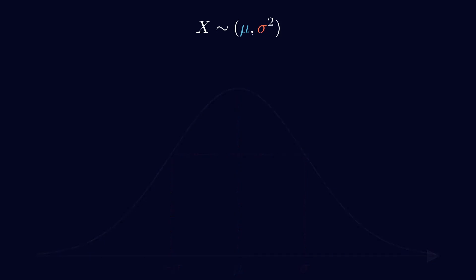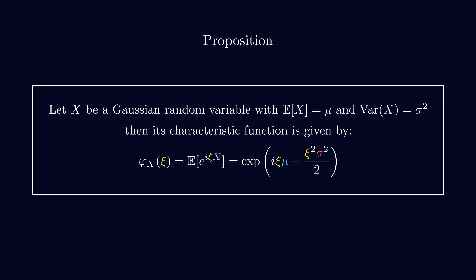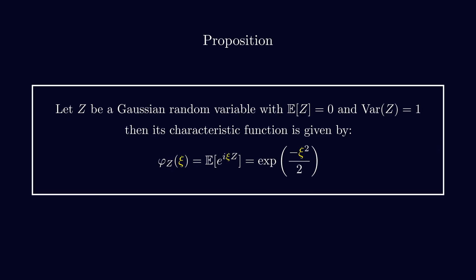Now, let's define the characteristic function for a Gaussian random variable. There is also a simpler version. If we have a standard normal random variable with a mean of 0 and a variance of 1, the characteristic function becomes much simpler.